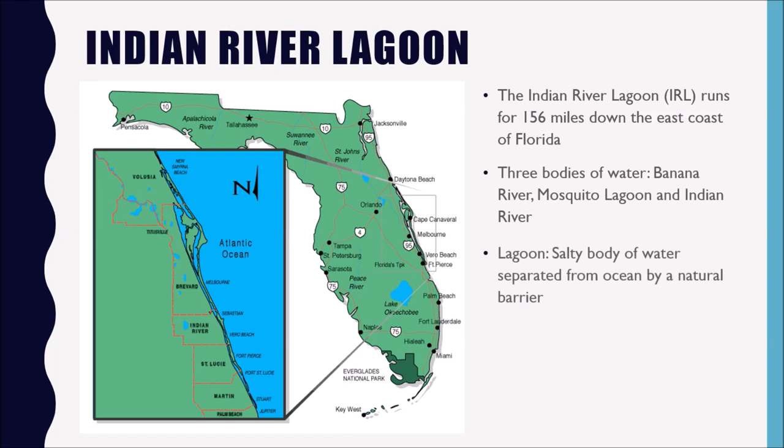A lot of people ask what is a lagoon. A lagoon is a salty body of water separated from the ocean by a natural barrier — in our case, the islands that run down the east coast of Florida, including Hutchinson Island, where the St. Lucie County Aquarium is located. It's a shallow body of water; the average depth is about four to six feet, which is why we get so many seagrass beds and so many different species of seagrasses growing in our lagoon.